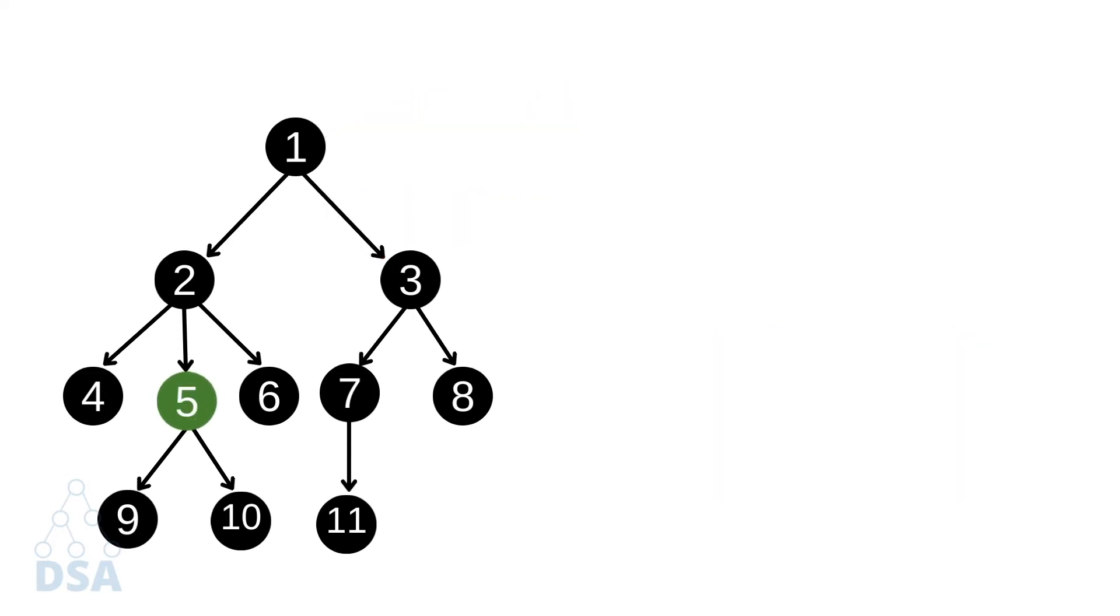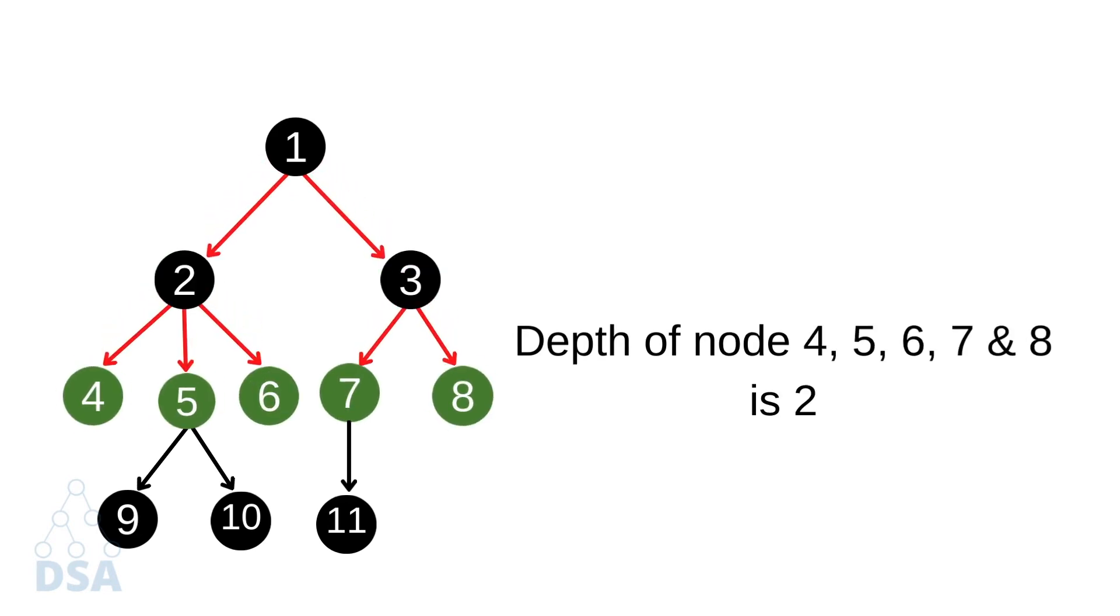For example, we consider node 5. It has two edges in the path from root, so the depth of this node is 2. In this tree, the depth of nodes 2 and 3 is 1. Depth of nodes 4, 5, 6, 7, and 8 is 2.